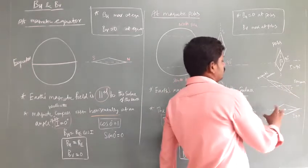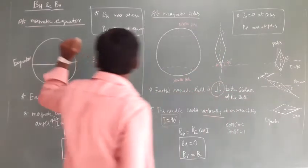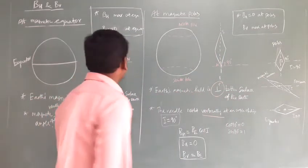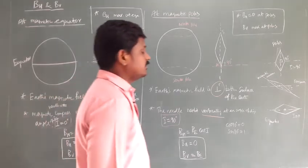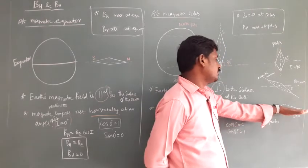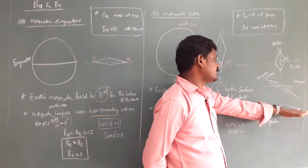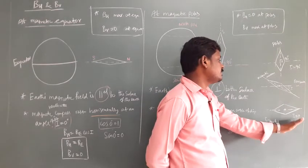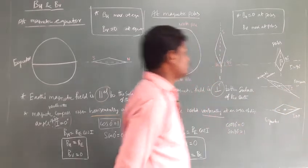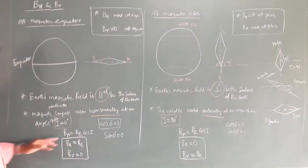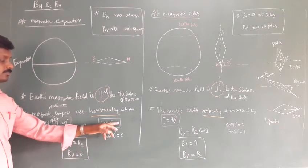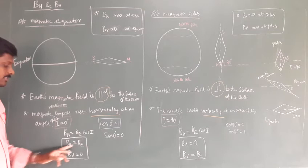At the magnetic equator, what are the BH and BV values — that is, horizontal component and vertical component? The magnetic needle rests horizontal, parallel to the equator, so I is equal to 0. BH is equal to BE cos I, so cos 0 equals 1, therefore BH is equal to BE.